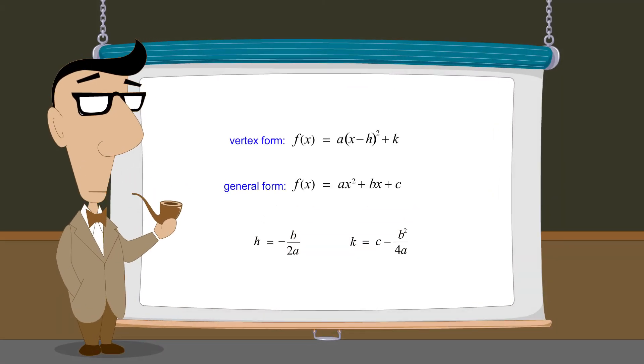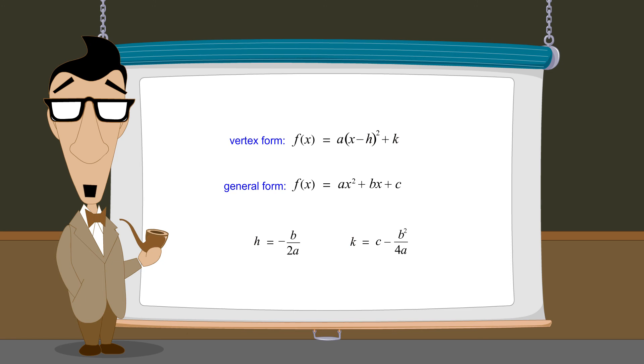We now have conversion formulas that allow us to calculate values for the constants h and k in the vertex form, given the values of the constants a, b, and c in the general form.